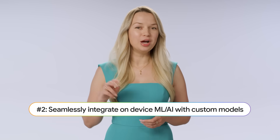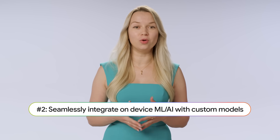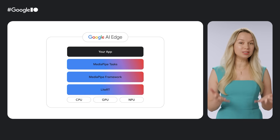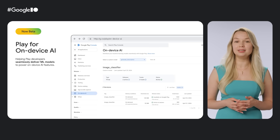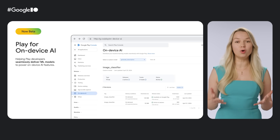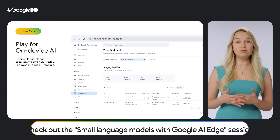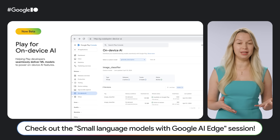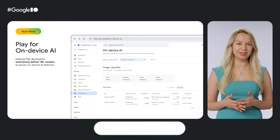Number 2. We are giving you even more control over on-device AI. With MediaPipe and LiteRT, you can deploy your own custom models on Android devices. Plus, the new Play for on-device AI helps you efficiently manage model downloads and updates, ensuring a smooth user experience.